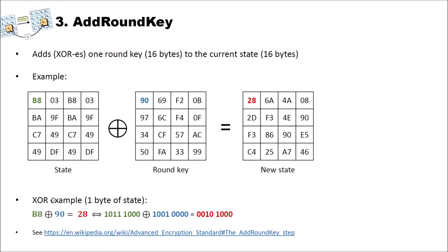For example, the first byte of our state is B8, XOR 90 equals 28 — all in hex. In binary: 1011 1000 XOR 1001 0000 gives 0010 1000, which is 28. XOR means that when we have 1 and 1, we get 0; if we have 0 and 1, or 1 and 0, we get 1. So the add round key building block simply XORs the current state with the current round key.